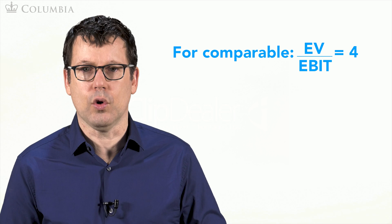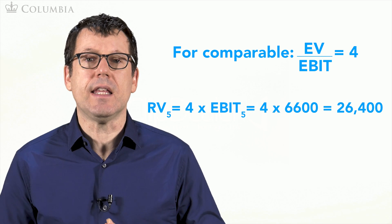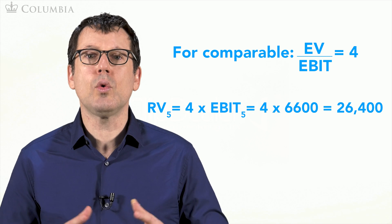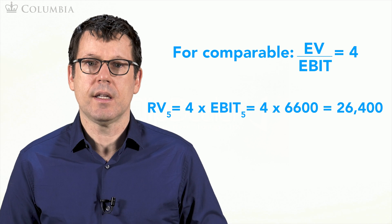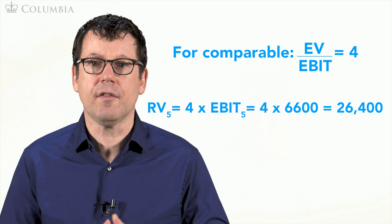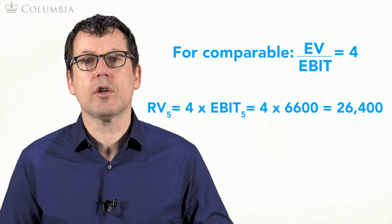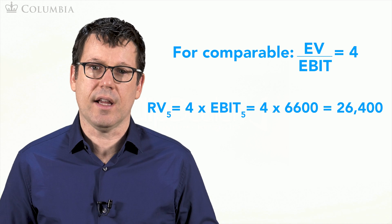Imagine the trailing enterprise value to EBIT for a comparable firm is 4. We multiply the 4 times the EBIT in year 5, or 6,600, to obtain a value of 26,400. Since we are using a trailing multiple and the EBIT for year 5, the 26,400 corresponds to the enterprise value as of the end of year 5.